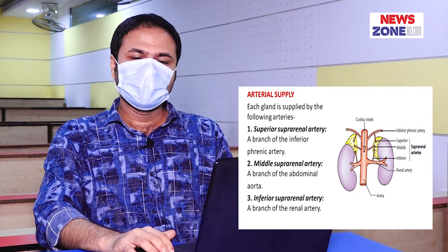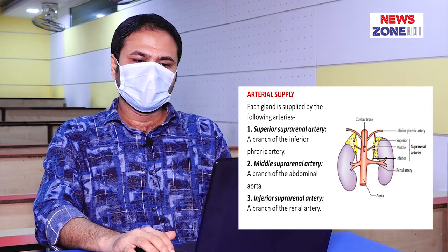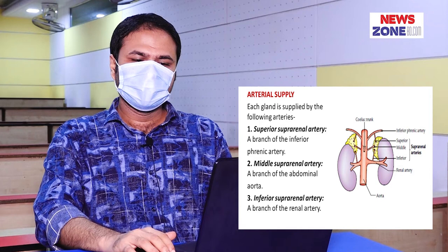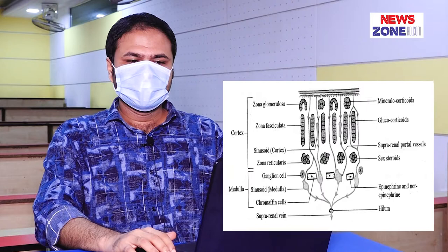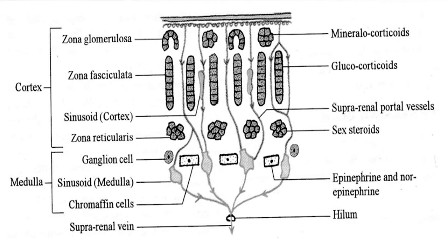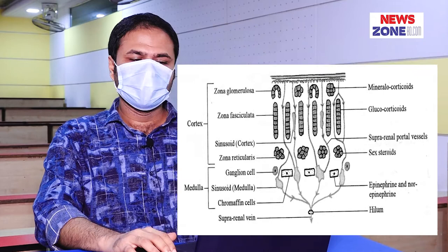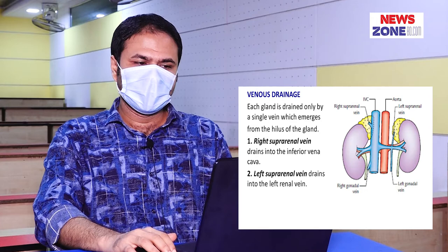Arterial supply of the suprarenal gland. Each gland is supplied by three arteries: 1. Superior suprarenal artery, a branch of the inferior phrenic artery. 2. Middle suprarenal artery, a branch of the abdominal aorta. 3. Inferior suprarenal artery, a branch of the renal artery. These arteries form a plexus beneath the capsule. From this plexus, straight vessels pass through the cortex and end in the medullary sinusoids, either directly or via cortical sinusoids. The vessels communicating cortical and medullary sinusoids are known as the suprarenal portal system. Such portal vessels convey an enzyme known as phenylethanolamine N-methyltransferase from the cortex to the medulla for conversion of norepinephrine into epinephrine by methylation.